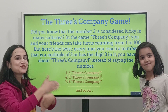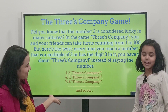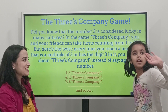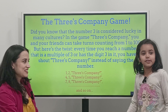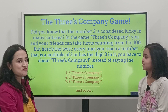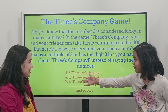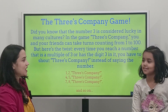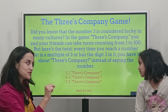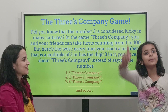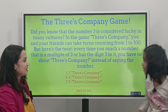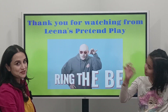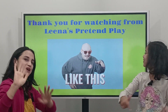You can keep on doing it! You're skipping like 3, 6, 9 — all the multiples of 3. It's so fun! Like 1, 2 and then 4, 5 — and instead of saying 6 you say '3's Company!' That's all. Thank you so much for watching. See you guys next time, bye!